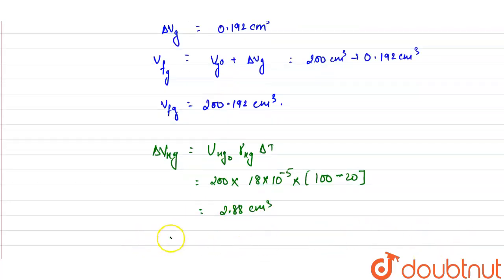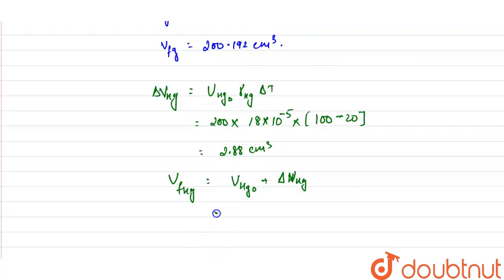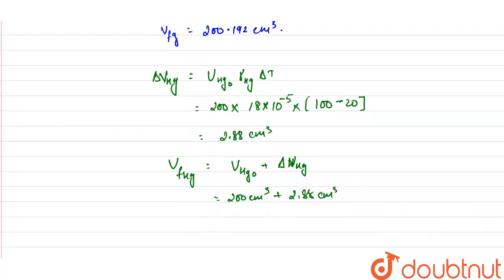The final volume of mercury equals the initial volume of mercury plus the change in volume of mercury. So 200 centimeter cube plus 2.88 centimeter cube equals 202.88 centimeter cube. This is the final volume of the mercury.